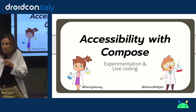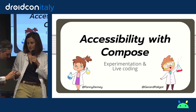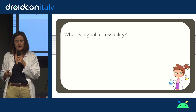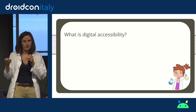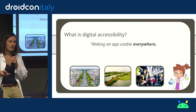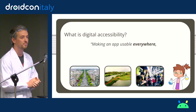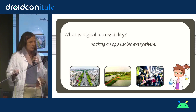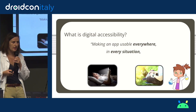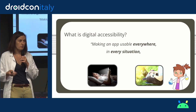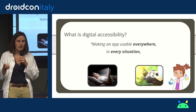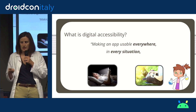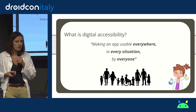First, let me share with you a definition we have about accessibility. For us, accessibility is wider than we think. It's about making an app usable everywhere — whether you live in the middle of Paris, in the middle of nowhere in India, or if you have no data connection in the subway. It's also about making an app available in every situation, whatever phone you have, whether you're using your phone in bed in the dark or using a laptop on a sunny day outside. And, of course, by everyone — disabled or not.